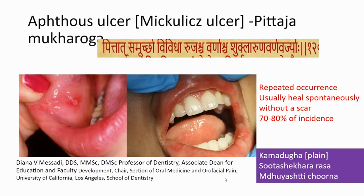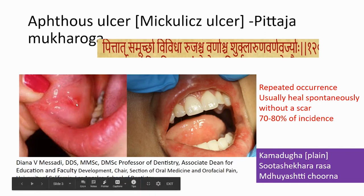Among the stomatitis conditions, the commonest variety we see quite frequently is the minor aphthous ulcer. The exact causes are not known. It is often claimed to be produced due to deficiency of vitamins, and the usual prescription in the contemporary system uses B complex and so on. It is often related to food habits — those who consume more spicy food tend to develop this kind of lesion. Characteristically, these lesions are very superficial and the size is small.